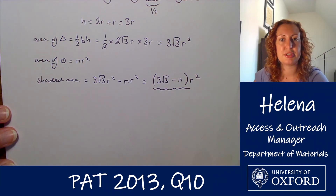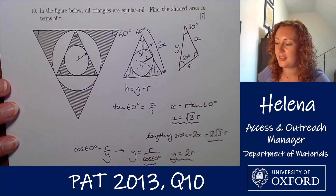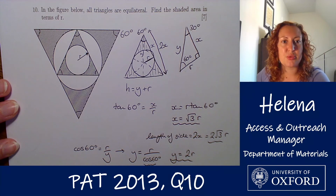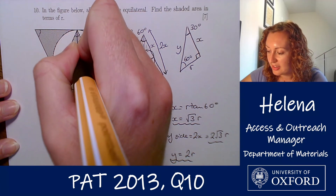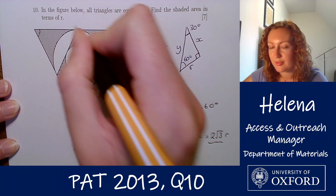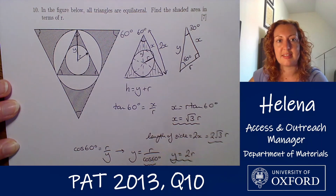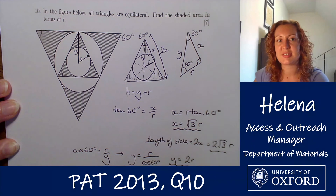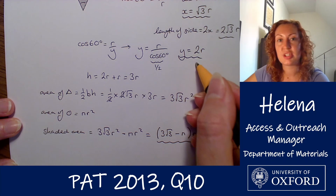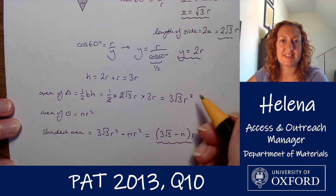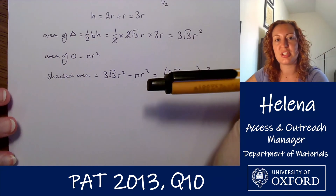Now let's look at the larger shaded area. We need the radius of the larger circle, which we've already found — looking at the diagram, it's equivalent to our value of y, which was 2r. So our bigger circle has a radius of 2r, which is 2 times the radius of the small circle.